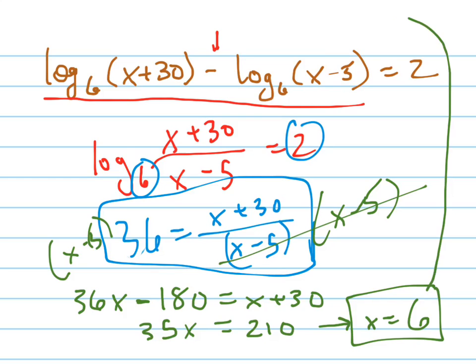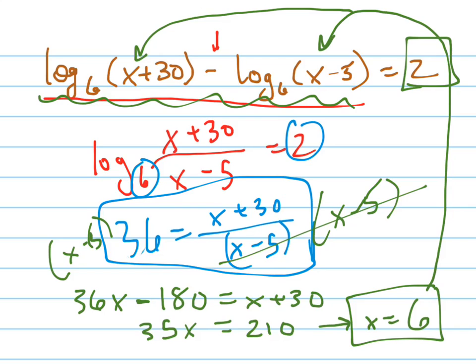Now I can check this answer, and you always should check it, by plugging it back in for all the x's up there and making sure that this left side equals this right side. So the log base 6 of 36 is 2, and the log base 6 of 1 is 0. 2 minus 0 equals 2. It checks out.